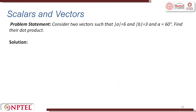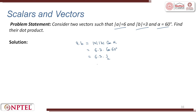Dot product example: |A| = 6, |B| = 3, angle = 60°. A · B = |A||B| cos α = 6 × 3 × cos 60° = 6 × 3 × 1/2 = 9. So A · B = 9.